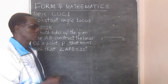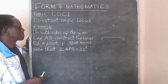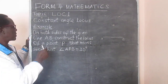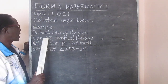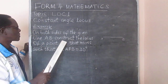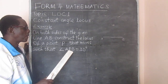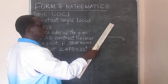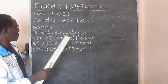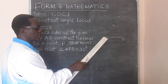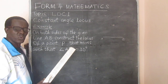This is the theorem that we are going to apply in doing the constant angle locus, and there is a question which is going to act as our example. We have a given line AB and we are told that on both sides of the given line AB, construct the locus of a point P that moves such that angle APB — that angle, APB, even on the other side — is equal to 30 degrees.